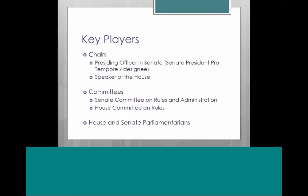Both chambers also have parliamentarians — individuals who are experts in congressional procedure. They help the chairs decide on issues of procedure when an issue arises. The parliamentarians' recommendations and decisions aren't binding, but because they are the experts they are often followed and can have a really significant impact on legislation. For example, during the passage of the Affordable Care Act, whether the Act was going to proceed to passage really did turn on the ruling of the Senate parliamentarian at the time.